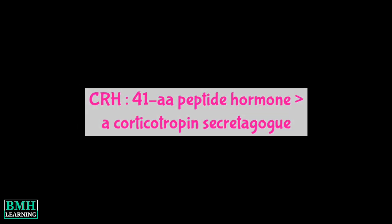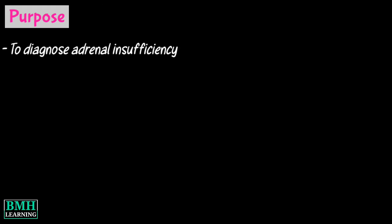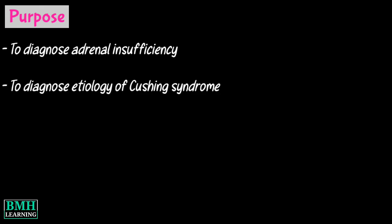CRH is a 41 amino acid peptide hormone. CRH tests are performed for the following purposes: to diagnose adrenal insufficiency and to diagnose the etiology of Cushing's syndrome.